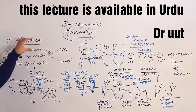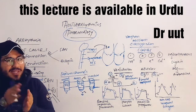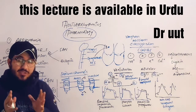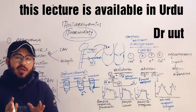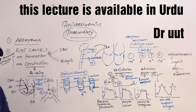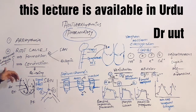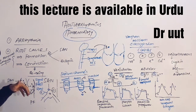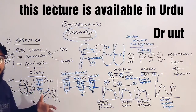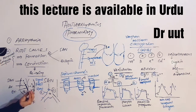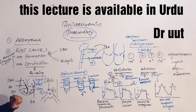What is arrhythmia? 'A' means without, and 'rhythmia' means rhythm. Without rhythm — when the heart contracts and relaxes abnormally — that is called arrhythmia. The root causes are that abnormal impulses are sent by the sinoatrial node to the ventricles, causing them to contract and relax abnormally, which is called arrhythmia.